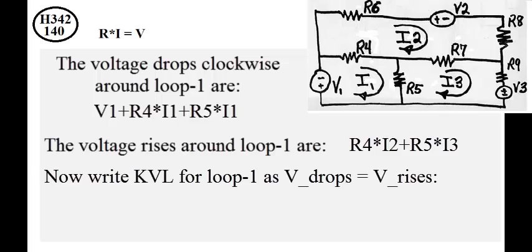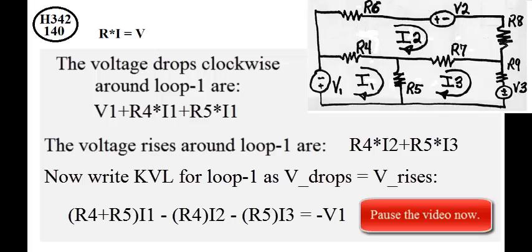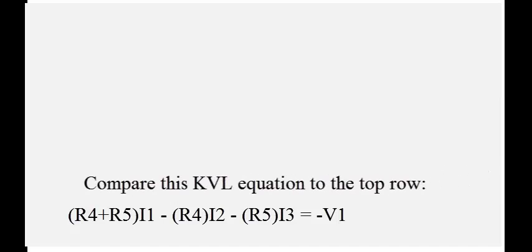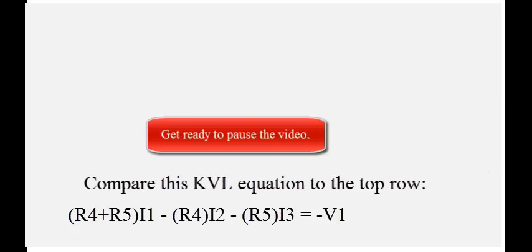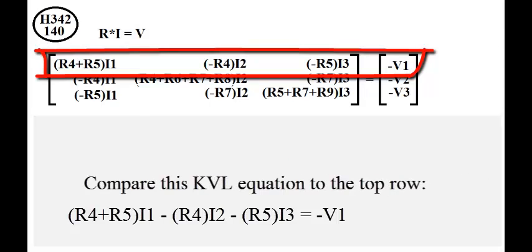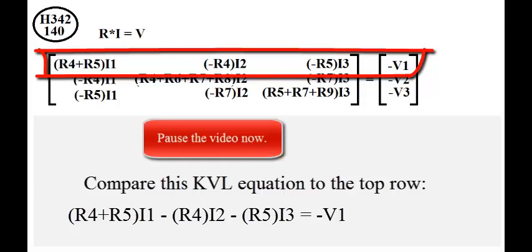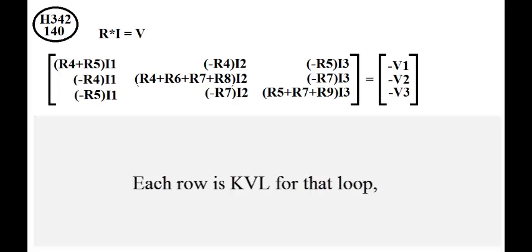Now I'll write Kirchhoff's voltage law as voltage drops equal voltage rises. This is Kirchhoff's voltage law for that loop. Compare this Kirchhoff's voltage law equation to the top row. Each row is Kirchhoff's voltage law for that loop, written as voltage drops equals voltage rises.